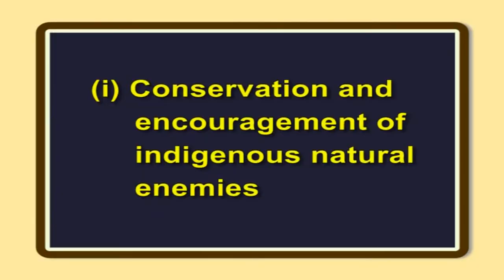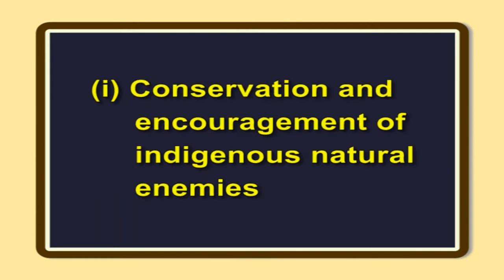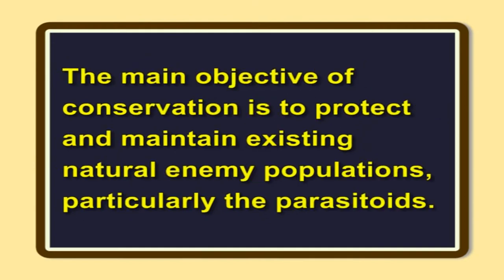Three major techniques of biological control. Biological control is achieved by: conservation and encouragement of indigenous natural enemies; importation or introduction or classical biological control; and augmentation. Conservation is defined as the actions to preserve the natural enemies by environmental manipulations. The main objective of conservation is to protect and maintain existing natural enemy populations, particularly the parasitoids.